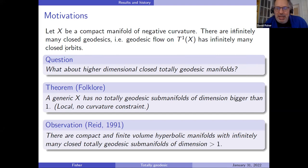The counterpoint to this folklore theorem is an observation made by Reid in around 1991, which said there are compact and finite volume hyperbolic manifolds in every dimension bigger than two that have infinitely many closed totally geodesic submanifolds of dimension bigger than one. So while these things don't show up if you pick a random metric on a manifold, if you like hyperbolic geometry they occur in some sense quite frequently — at least there are examples where they occur quite frequently.